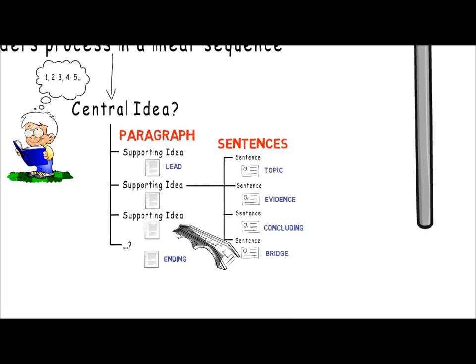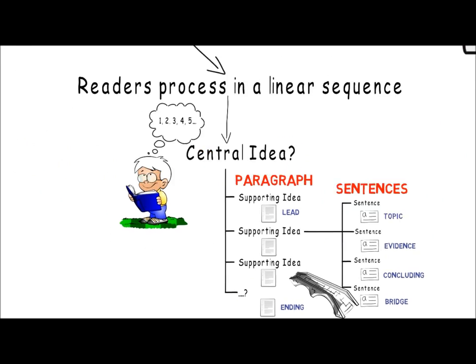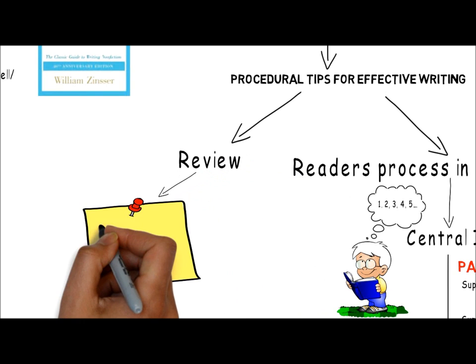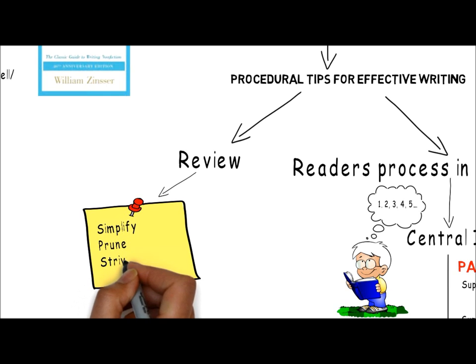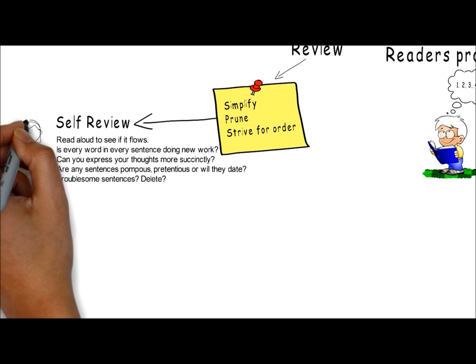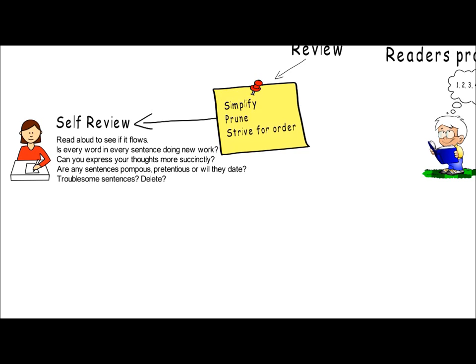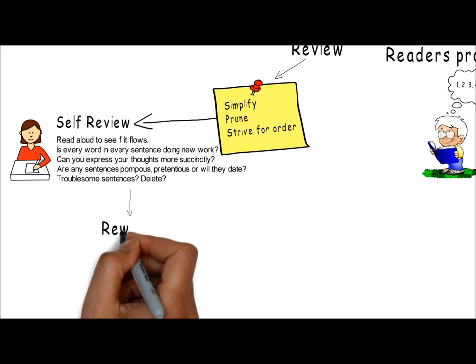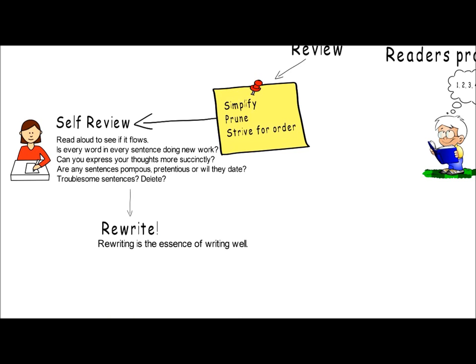Planning the structure of your writing should occur before you sit down and write. After you've finished writing, you need to review — simplify, prune and strive for order. All of your writing should be reviewed by you, the writer, in the first instance. Read the entire piece aloud to see if it flows. Does it make sense? Does it sound right? Is every word in every sentence doing new work that leads the reader to the conclusion? Can you express your thoughts more succinctly? Are any of your sentences pompous, pretentious or will they date? Do you have any particularly troublesome sentences — would your paper lose anything if they were deleted altogether? And finally, be prepared to rewrite your paper. Rewriting is the essence of writing well.